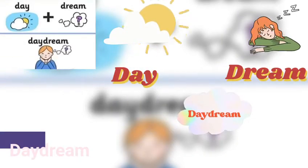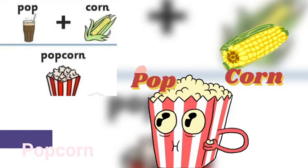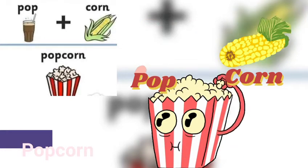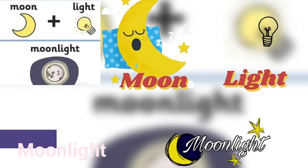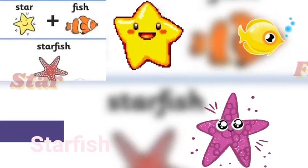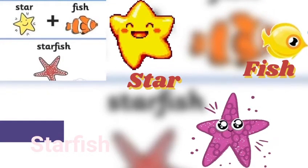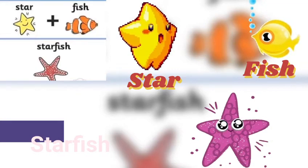'Dragon' is one object, 'fly' is the second object — you connect them into 'dragonfly'. 'Day' is one object, 'dream' is the second object — you connect them into 'daydream'. 'Pop' is one object, 'corn' is the second object — you connect them into 'popcorn'. 'Moon' is one object, 'light' is the second object — you connect them into 'moonlight'.